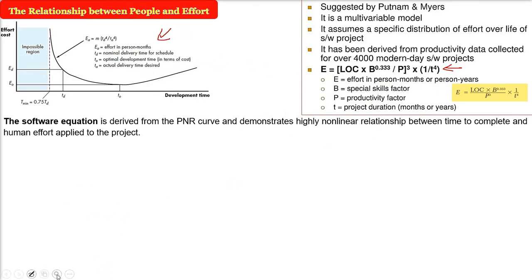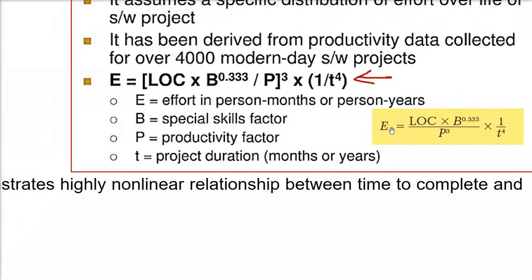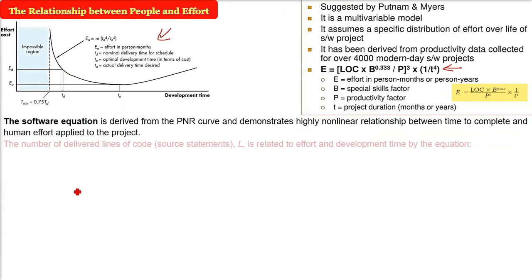The B and B, let me show you here, I showed you this software equation. B was the special skill factor, P was the productivity factor, time was the project duration, E is the effort in person months or person years.